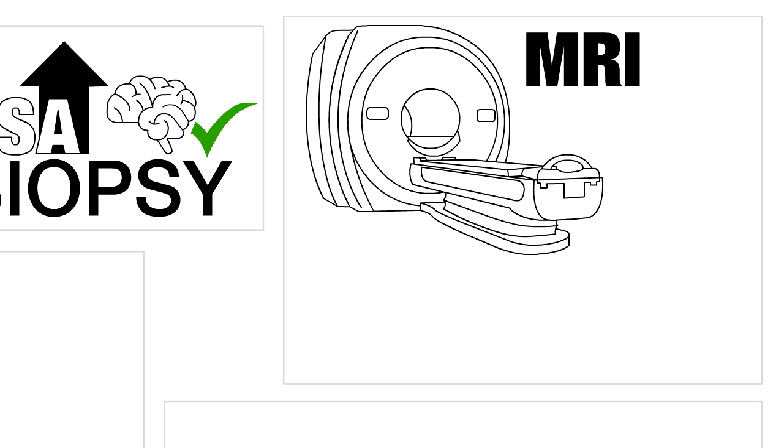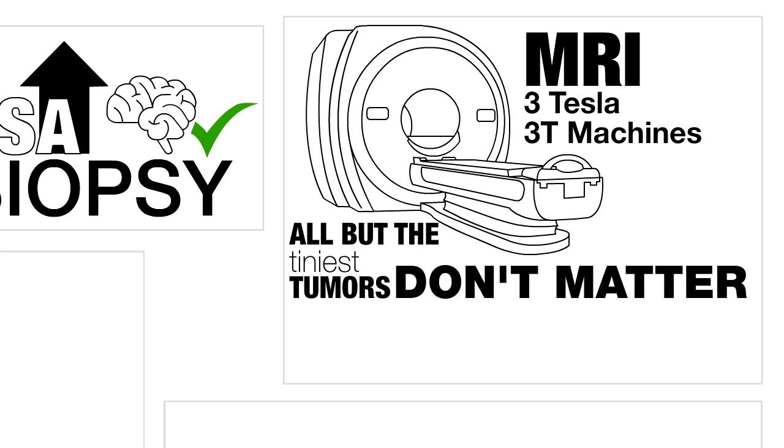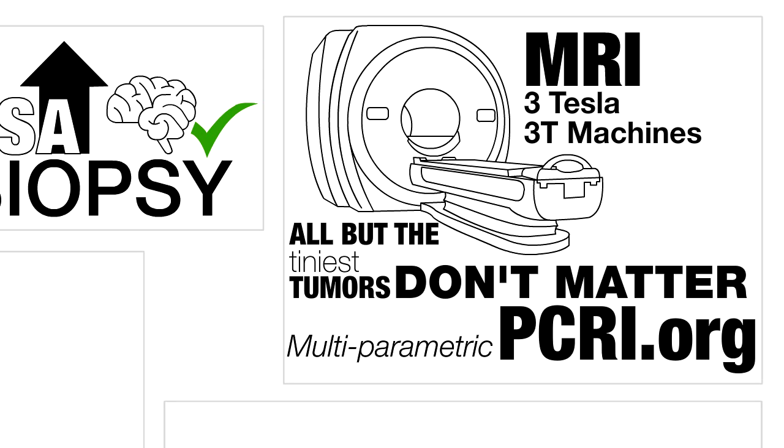First, an MRI. Recent advances in MRI imaging have changed everything. The latest generation of MRI machines called 3-Tesla or 3T machines enable radiologists to see all but the tiniest tumors. The tumors that they can't see almost certainly don't matter. You can find a list of MRI centers that do multiparametric testing using a 3T scanner on PCRI.org.